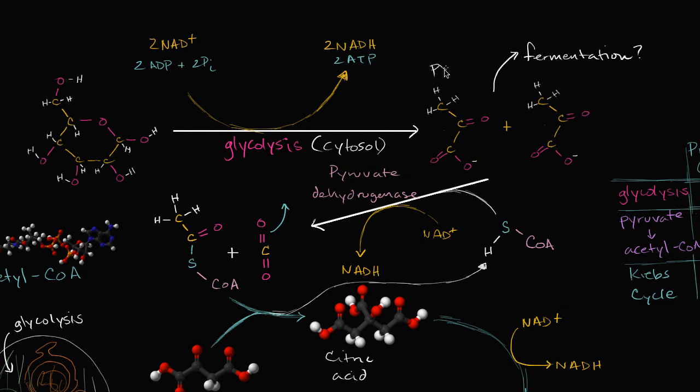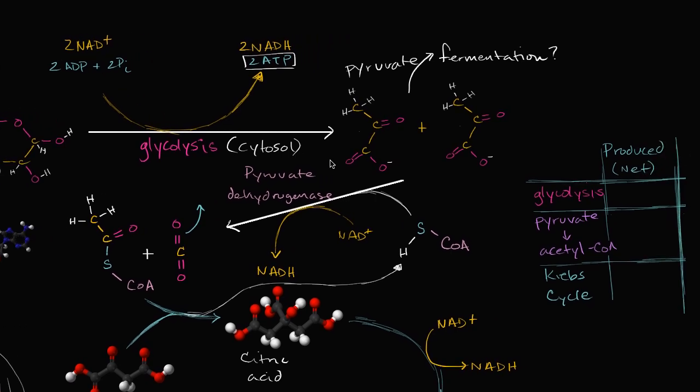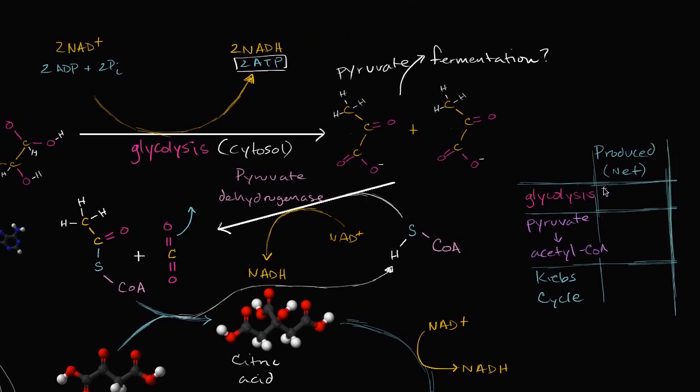And these three-carbon molecules, we go into detail in another video, we call these pyruvate. And in the process of doing so, this is the point of glycolysis, we're able to, on a net basis, produce two ATPs. We actually produce four, but we have to use two. So on a net basis, we produce two ATPs. And I'm going to keep a little table here to keep track. So we produce two ATPs.